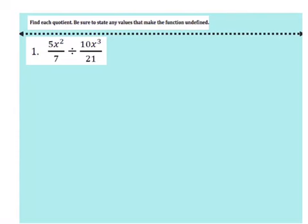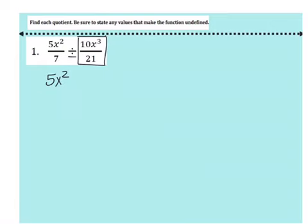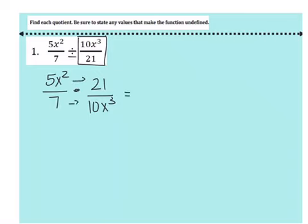Let's look at this first example. I have 5x squared over 7, all divided by 10x to the third over 21. Because this is a division problem, we need to turn it into a multiplication problem. So we flip the second one: 21 was on the bottom, it's now going to be on top; 10x to the third was on top, it's now going to be on the bottom. Then it turns into multiplication, exactly what we did last week. Multiplying straight across, I do 5 times 21 which gives me 105, and I still have x squared on top. Divided by 7 times 10 which gives me 70, and x to the third on the bottom.